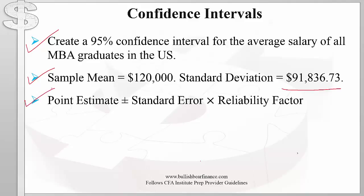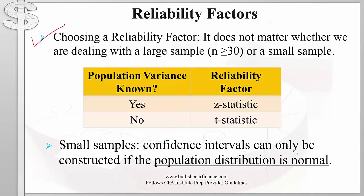Recall from our previous video that any confidence interval takes this general form: point estimate plus or minus standard error times reliability factor. A very important point about choosing a reliability factor — it does not matter whether we are dealing with a large or small sample, where a large sample has at least 30 observations. When choosing a reliability factor we ask only one question: do we know the population variance? If we do, we choose the z statistic; if we don't, we use the t statistic with degrees of freedom equal to n minus 1.